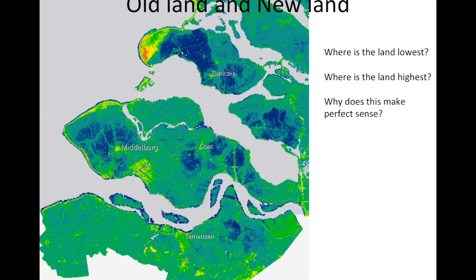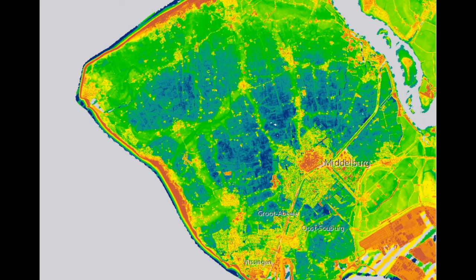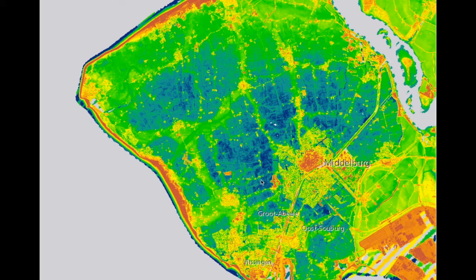There is one interesting thing if we look especially at Walcheren. In the close-up with another legend — the bluer it is, the lower; the more orange, the higher — you can see dikes and large buildings in Vlissingen and Middelburg. But focusing on the old land polders, there is something remarkable going on throughout Walcheren: there are clear higher areas of about one meter. In some cases these are roads on dikes, but in other cases that is not the case.